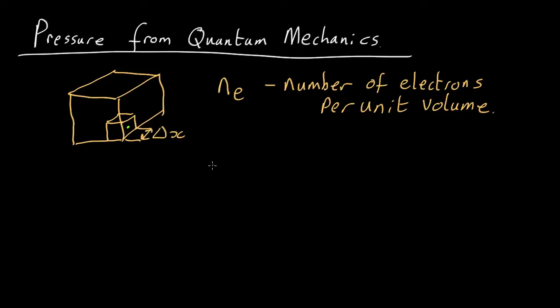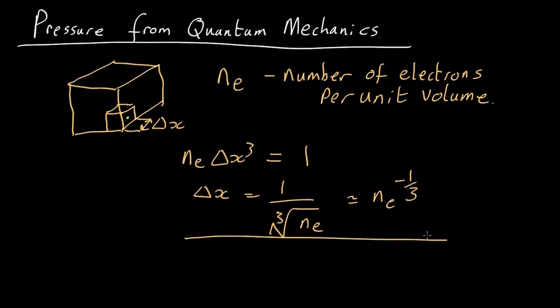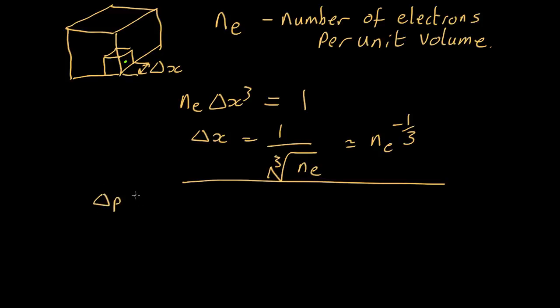And what is delta x? Well, each electron has a volume delta x cubed, that being the volume of a square of each side delta x, and there are Ne electrons in one unit volume. So what that's telling us is that delta x is equal to one over the cube root of Ne. So that's Ne to the minus a third. Now, if we have that uncertainty in its position, that means there's going to be an uncertainty in the momentum. So the uncertainty in the momentum times the uncertainty in the position is going to be h-bar. That's Heisenberg uncertainty principle. So the uncertainty in the momentum is going to be h-bar over delta x. So that's going to be h-bar Ne to the plus one third.